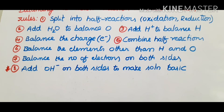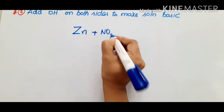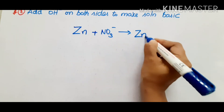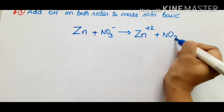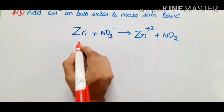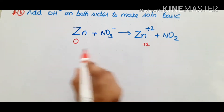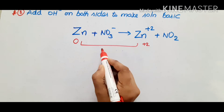Take the zinc reaction. You have to identify what is the oxidation reaction and what is the reduction reaction. We apply the oxidation state: zinc has an oxidation state of 0 initially, and Zn²⁺ has oxidation state of +2. Since the oxidation state increased from 0 to +2, this is oxidation.